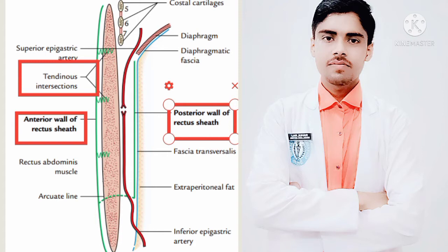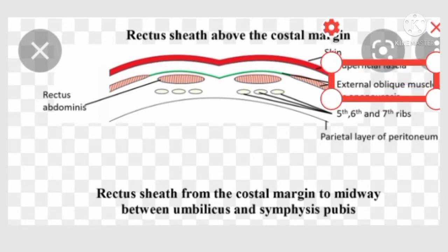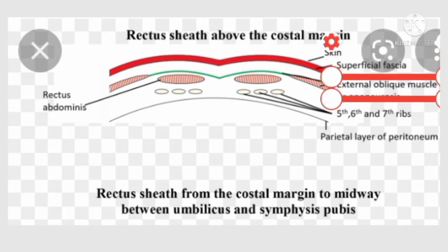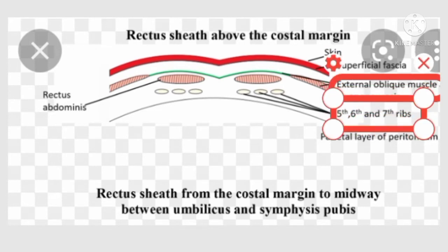Now we will discuss about the formation of the rectus sheath. Firstly, we will discuss about the formation above the costal margin. The anterior wall of the rectus sheath above the costal margin is formed by the external oblique aponeurosis, as you can see in the figure. The posterior wall above the costal margin is deficient and the rectus muscle rests directly on the 5th, 6th, and 7th costal cartilages, as you can see in the figure.